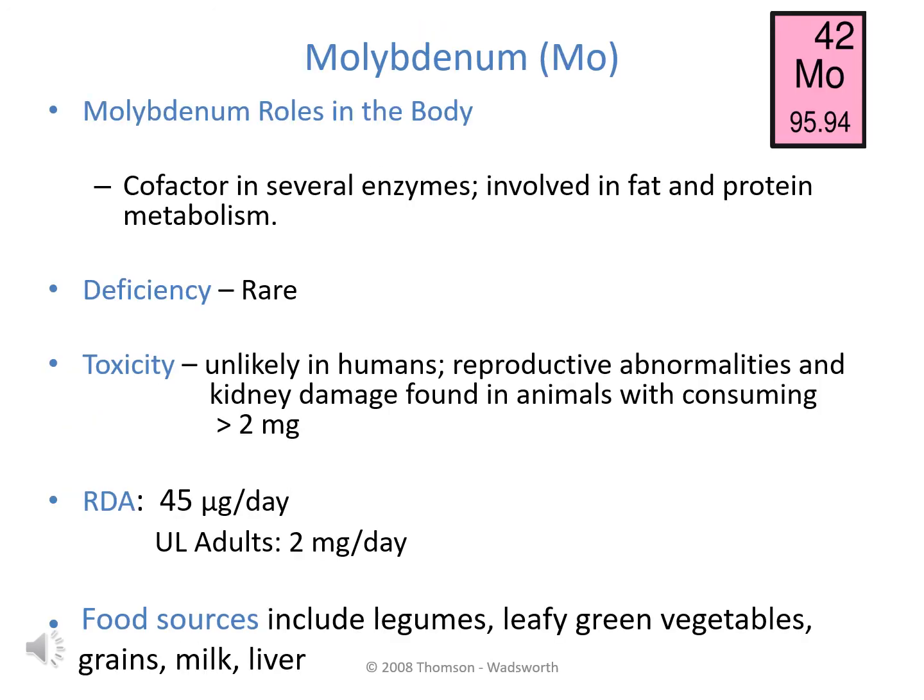The last trace mineral is molybdenum. It plays a role in several enzyme systems, including those involved in fat and protein metabolism. Deficiency is rare, and while toxicity is also unlikely, animal studies reported kidney damage and reproductive issues at intakes of more than two milligrams per day. As a result, the upper limit is set at two milligrams per day, and the RDA is 45 micrograms per day. Food sources of molybdenum include legumes, leafy green vegetables, grains, milk, and liver.